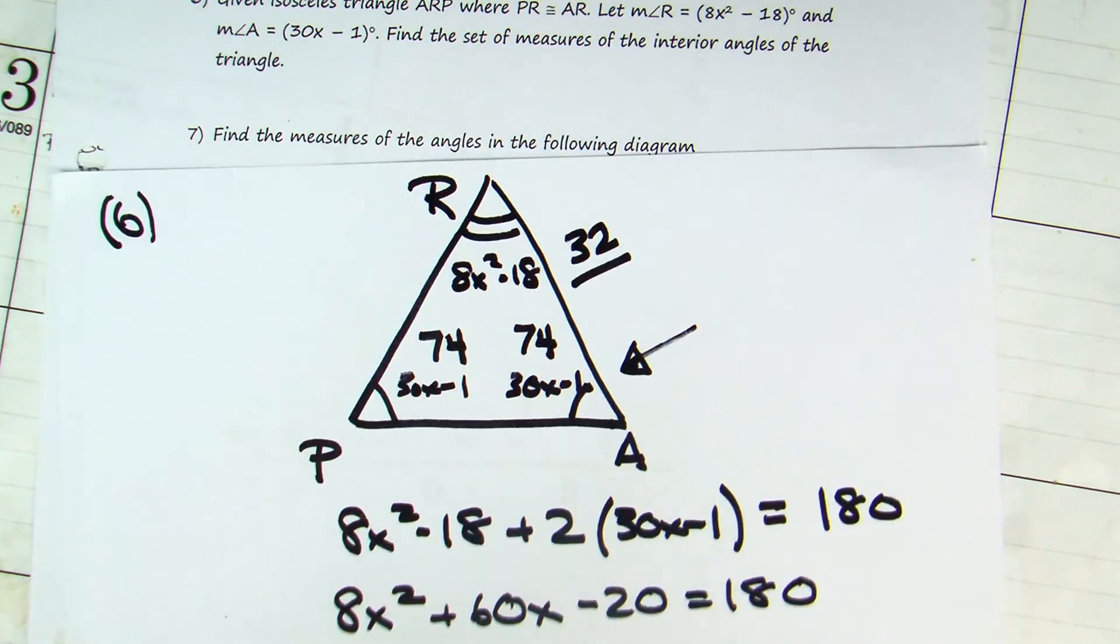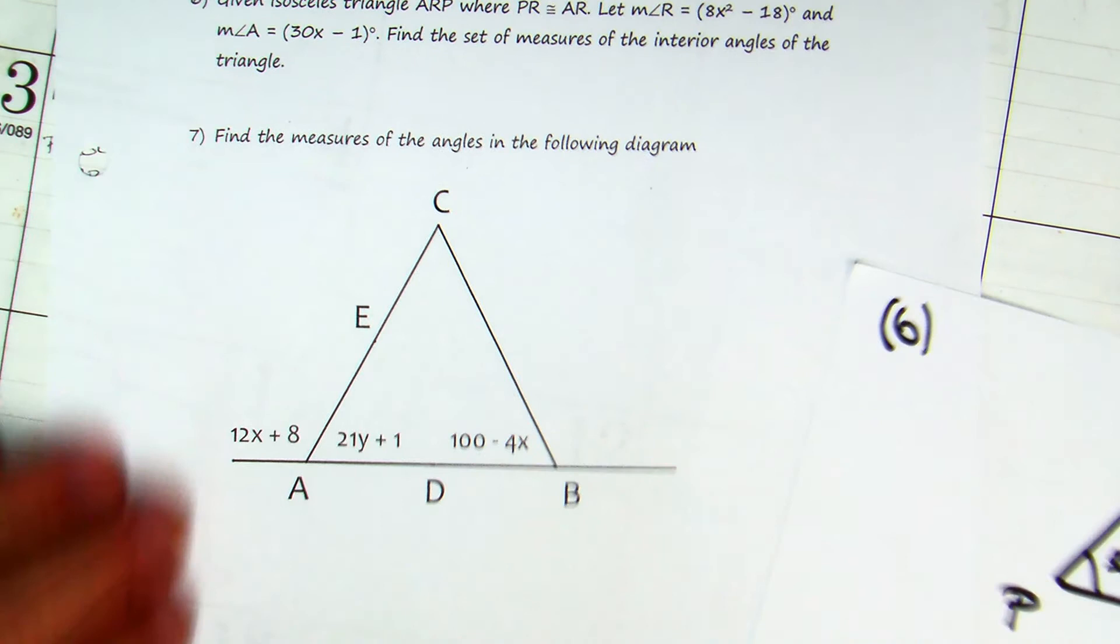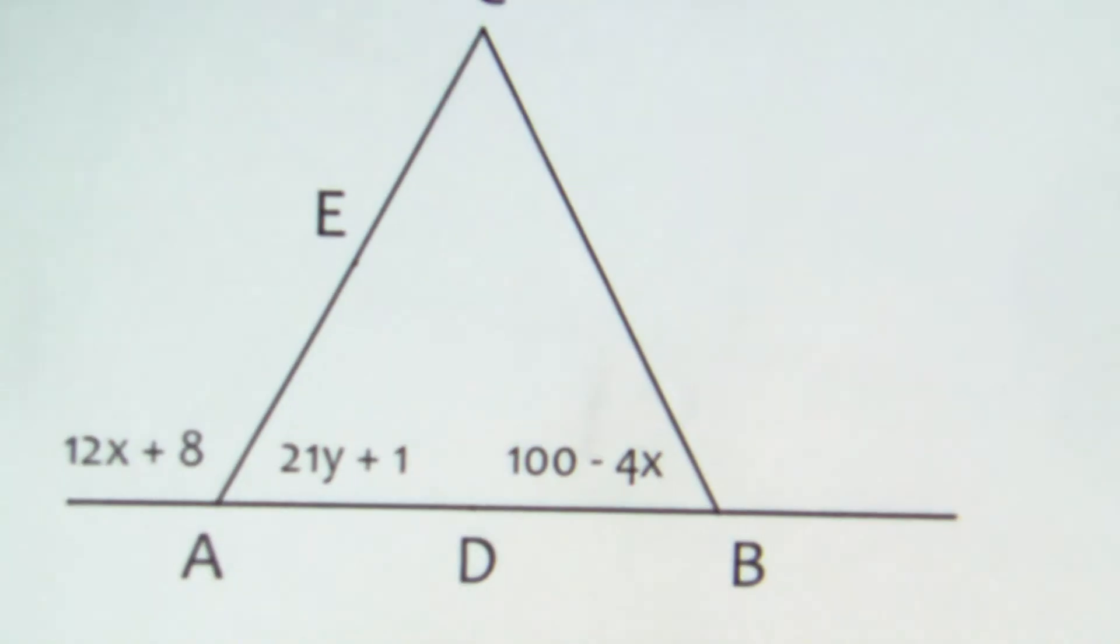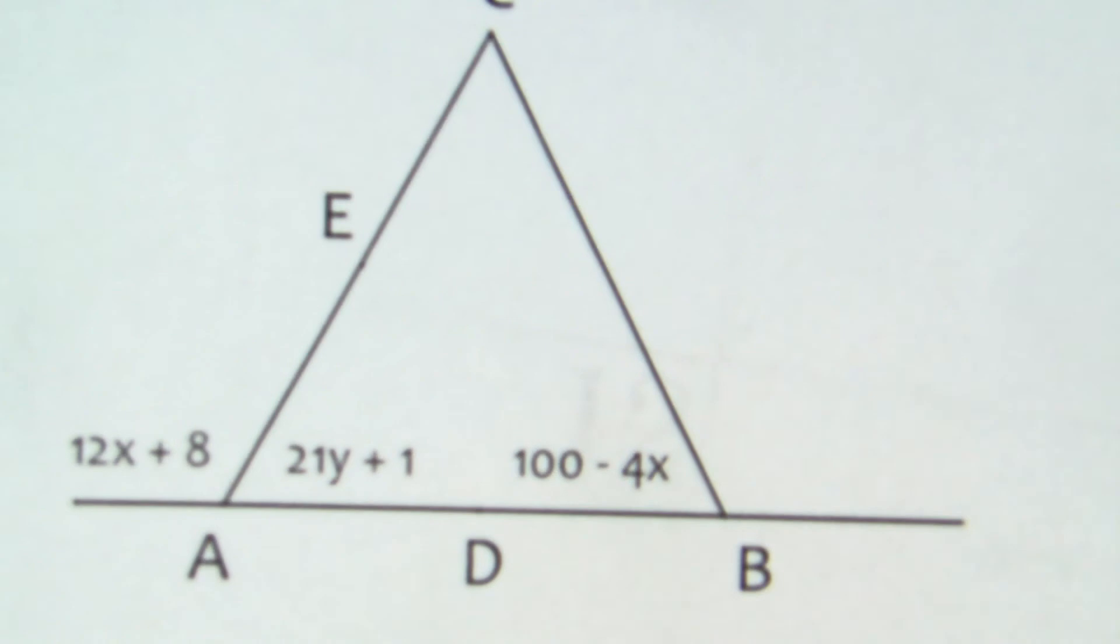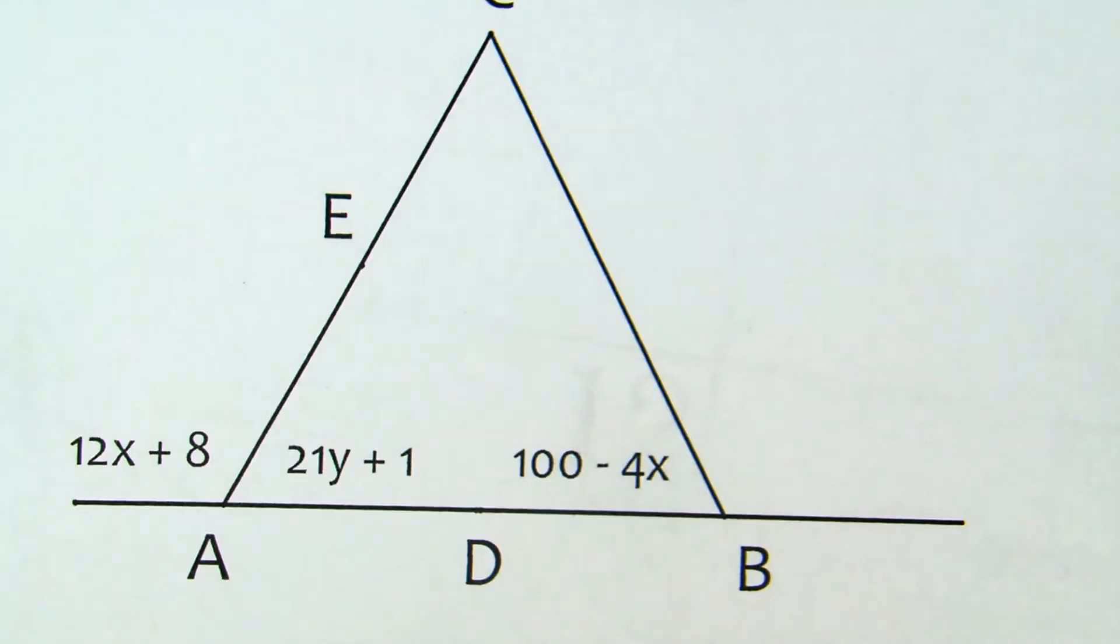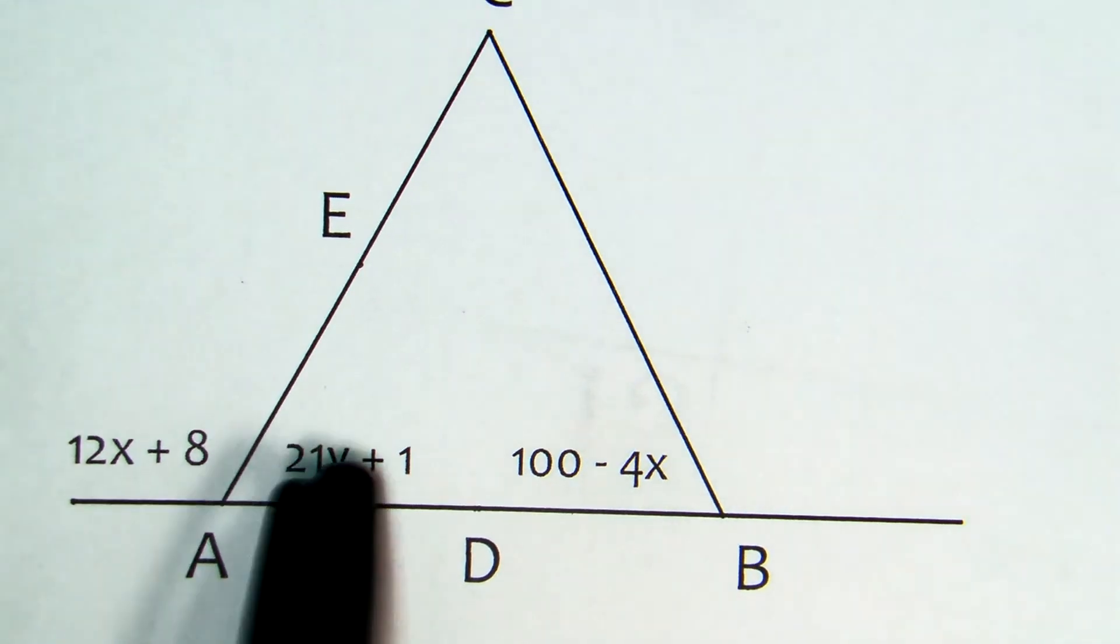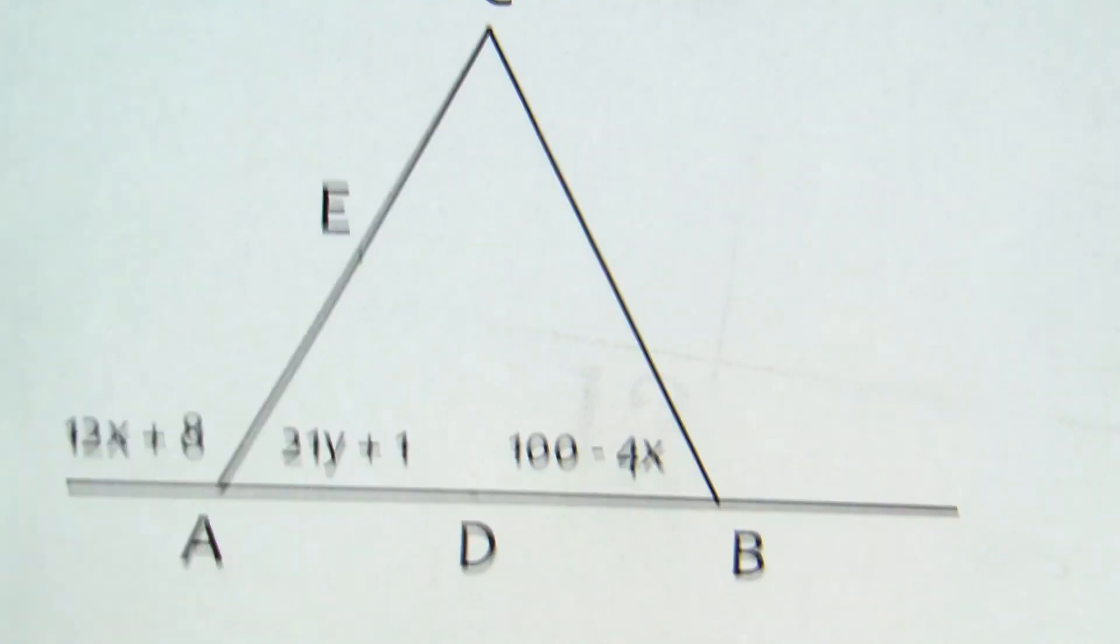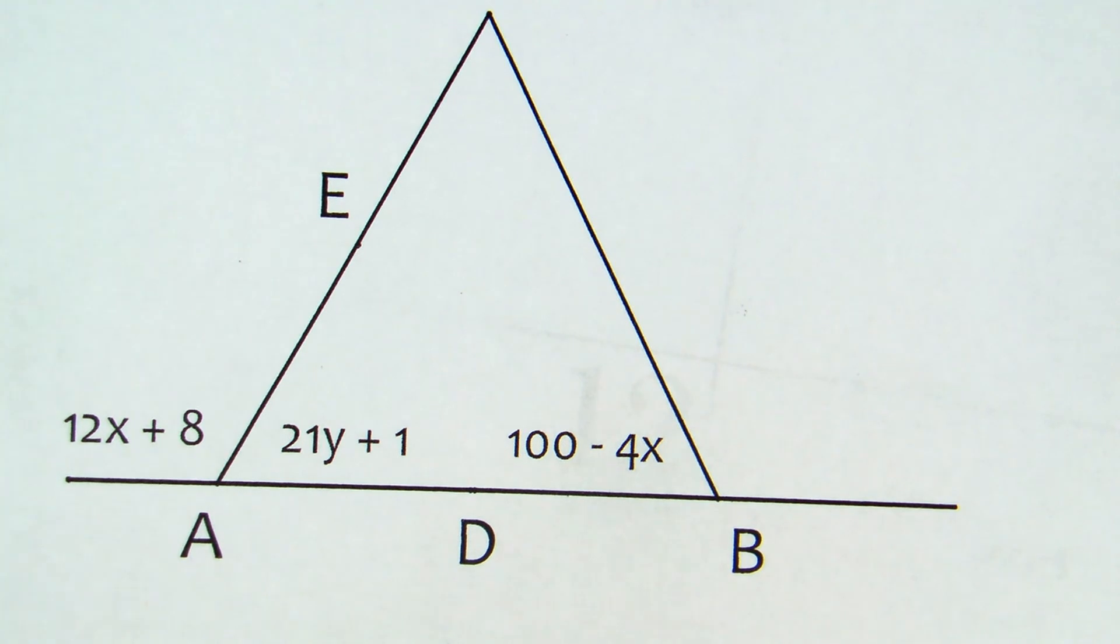Underneath it, find the measures of the angles in the following diagram. How many variables I got? Two. Now, you're going to get this in the homework tonight. These are base angles, so they're congruent. If they're the same variable, do you need systems? No. Unfortunately, they're not the same variable. So we've got to set up a system.